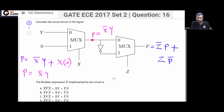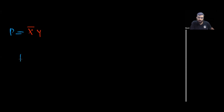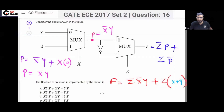So your function F equals Z̄P + ZP̄. P means X̄Y. What is P̄? You can apply De Morgan's law: P̄ = (X̄Y)̄ = X + Ȳ. So expanding, F = Z̄(X̄Y) + Z(X + Ȳ).